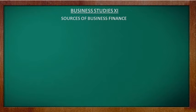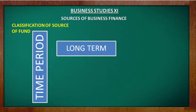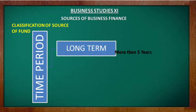Long-term sources: if an enterprise requires funds for a period of more than 5 years, then the sources from which the funds are raised are called long-term sources. Long-term sources are usually raised to fund fixed capital requirements, and are used more by large-scale enterprises. Examples include equity shares, debentures, and loans from banks or financial institutions.